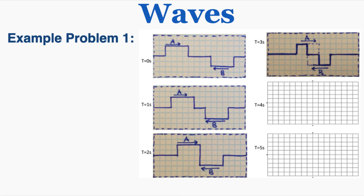I'll draw a dotted line to show where wave A would be at t equals 4, shifting it one more block from where it is at t equals 3. Wave B is shifted one block to the left. Because these waves occupy the exact same spot but one amplitude is positive and the other is negative, the superposition is going to be a perfectly flat line — the positive and negative amplitudes perfectly cancel each other out. That's what the medium would look like as the two waves pass through at t equals 4.